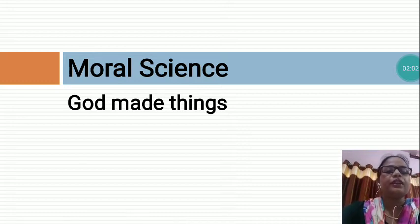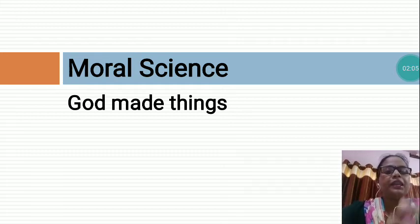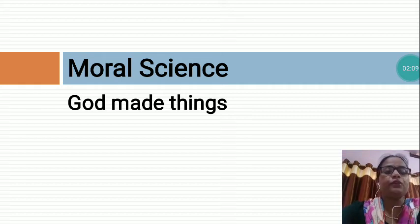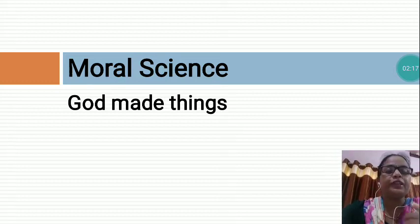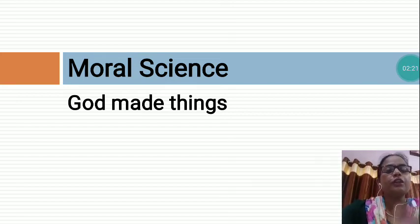Whatever things that are made by man, we say manmade thing. I have explained you very nicely that what are God Made Things and which things we say manmade things. But now, I am going to explain you how to draw the picture of a God Made Thing.